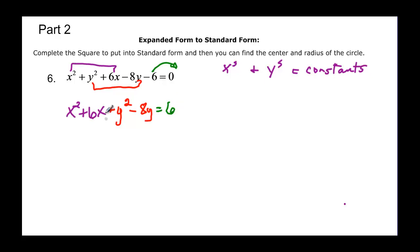Now when we complete the square we really need to have a little bit of space here. So let's rewrite this as x squared plus 6x plus some number, because that will complete that square, plus y squared minus 8y plus some number.